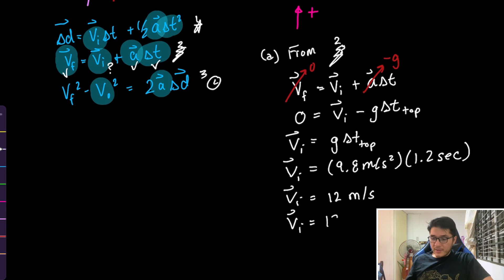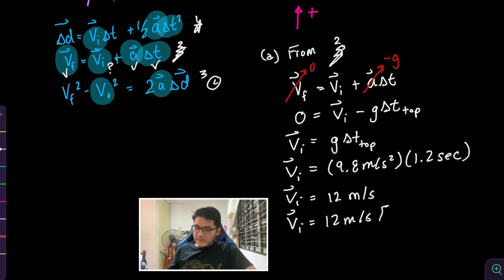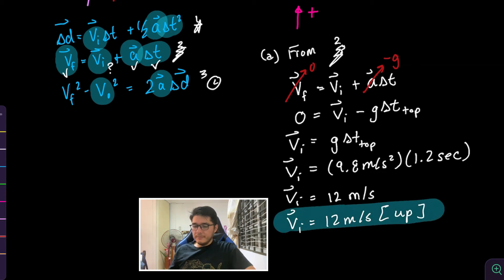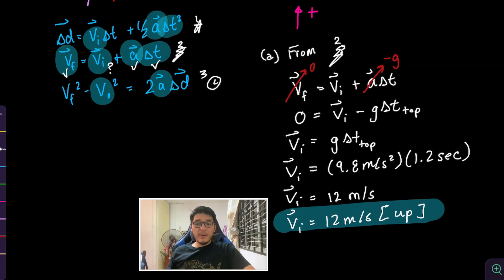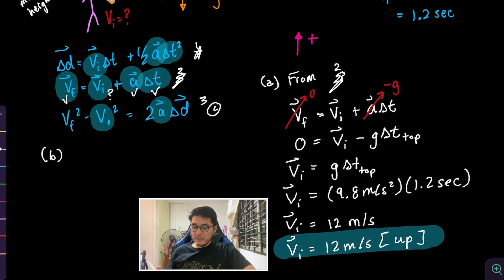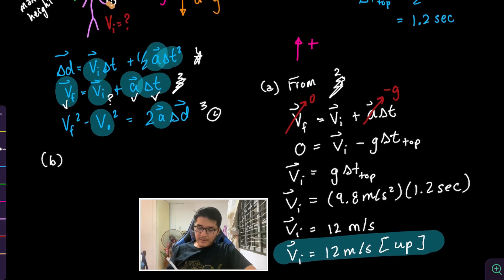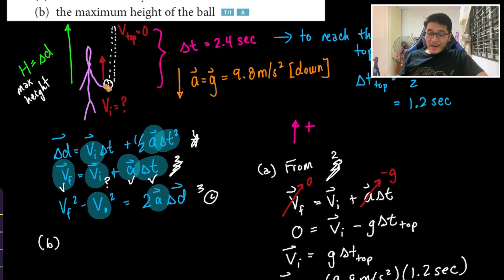Since positive was defined as up, we write: v_initial = 12 meters per second, upward. That one wasn't too bad. Now let's look at part b, which asks us to find the maximum height of the ball — the H we labeled earlier.